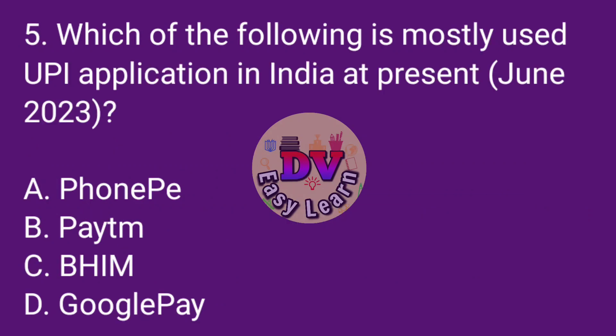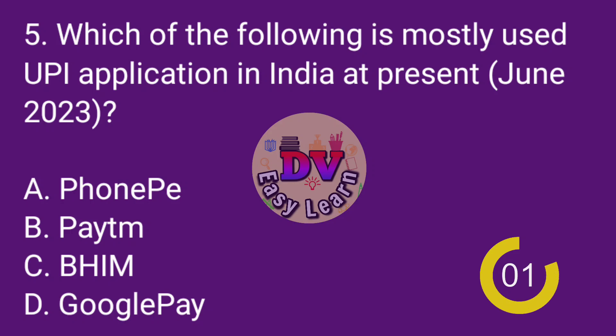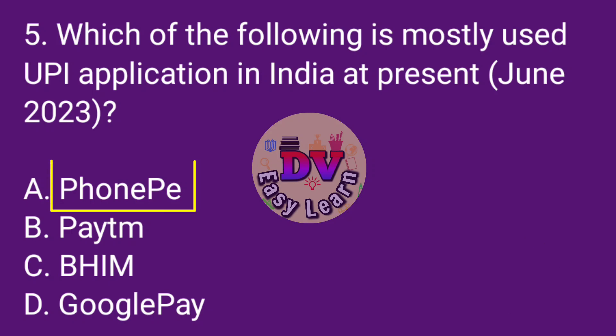Question number 5: Which of the following is the most used UPI application in India at present? Correct answer: PhonePe.